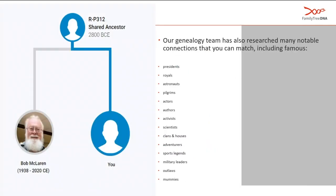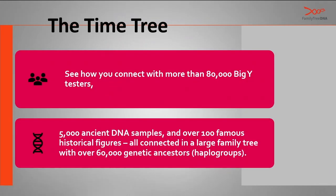Our genealogy team has also researched many notable connections including presidents, astronauts, pilgrims, actors, etc. Since we're at a genealogy conference, I thought it would be great to include a genealogist. The man in the picture is a notable genealogist, one of the earliest genealogists — his name is Bob McLaren. He was a fixture at genealogy conferences, known for wearing his kilt, and a pretty knowledgeable man. He also did a lot of work with the Clan McLaren Society as well.